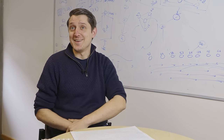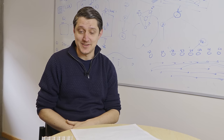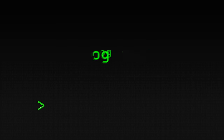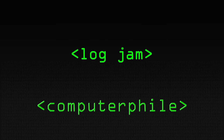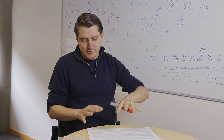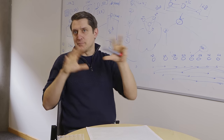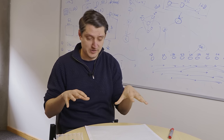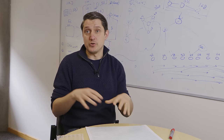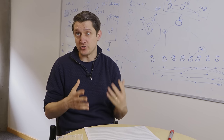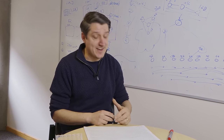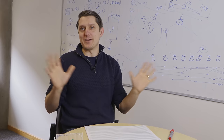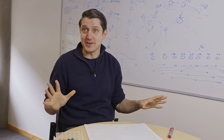Logjam is an attack from 2015, but it's a bit of a classic in the cryptography world. It's a really interesting attack because it actually has a number of parts. The first part is that you have to do a man-in-the-middle attack on an exchange. Then you have to do a protocol downgrade to convince a server to use a weak Diffie-Hellman key. And then you have to break it using a number field sieve. After you've done that, all bets are off — you've got all of the traffic from then on.